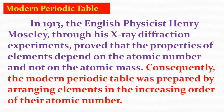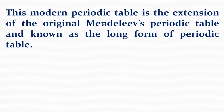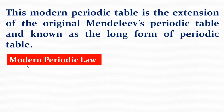Now we come to the Modern Periodic Table. In 1913, the English physicist Henry Moseley, through his X-ray refraction experiments, proved that the properties of elements depend on the atomic number, denoted by the symbol Z, and not on the atomic mass. Consequently, the Modern Periodic Table was prepared by arranging elements in the increasing order of their atomic number Z. This Modern Periodic Table is the extension of the original Mendeleev's Periodic Table and is known as the long form of the Periodic Table.